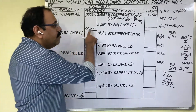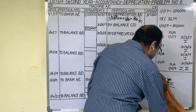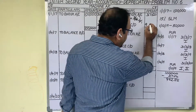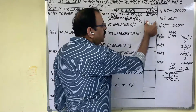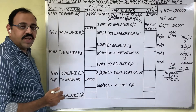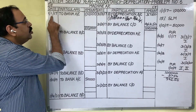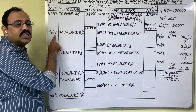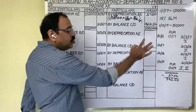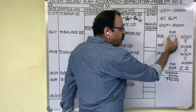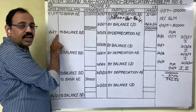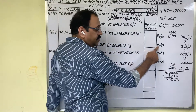Now find the balance carried down: debit total minus credit total = 1,00,000 − 3,750 = ₹96,250. Write this on the credit side and put the total. Then bring this balance carried down to the next year. The date for the next year is 1st April 2017. Note: even though we write 2017 in both the first and second year, the first year covers 2016–17, while the date 1st April 2017 belongs to the second year. Balance brought down is ₹96,250.